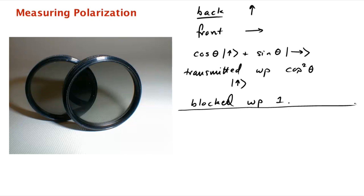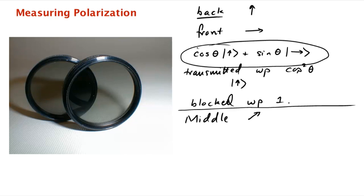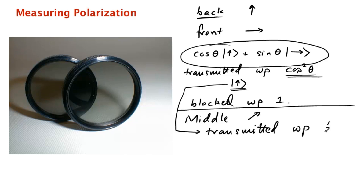Now let's change the scenario slightly. Take a third lens and interpose it between the back and front lenses. This middle lens is oriented at 45 degrees. Your first intuition would be: the light was already blocked, and you're adding something in the middle — surely that makes it even harder for light to get through, so it should be even darker. Let's go through the analysis. The photon encounters the back lens and is transmitted with probability cos²θ. Its new state is vertical. Now it encounters the middle lens, which is at 45 degrees, so it's transmitted with probability one half and blocked with probability one half.